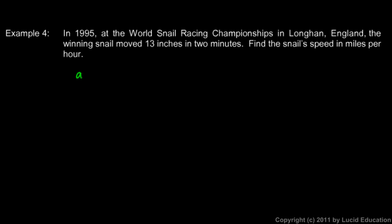So here we go. How fast was this snail going? Well, the average speed is distance over time. And the distance is 13 inches, and we divide that by the time, and the time is 2 minutes.